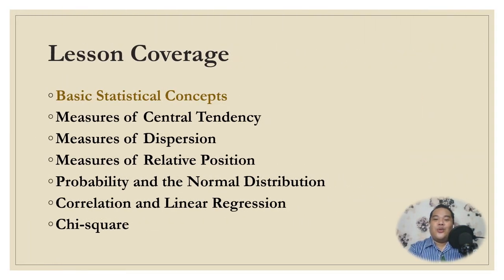This lesson will cover seven salient topics in statistics: first, basic statistical concepts; second, measures of central tendency; third, measures of dispersion; fourth, measures of relative position; fifth, probability and the normal distribution; sixth, correlation and linear regression; and the last one, the chi-square.